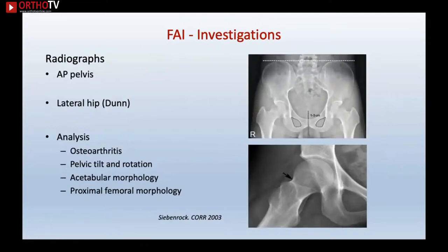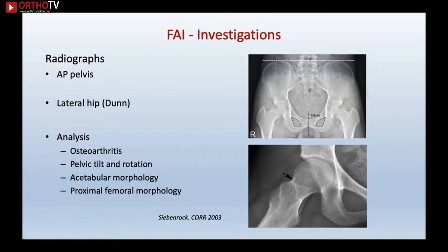For investigations, a well-centred AP pelvis and lateral hip x-ray are very important. On a well-centred pelvic x-ray, the pubic symphysis should be in line with the coccyx within one to three centimetres, with equal obturator foramina. You can comment on retroversion of the acetabulum by seeing the ischial spine, and comment on cam and pincer lesions.